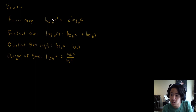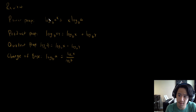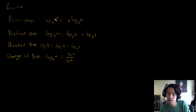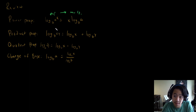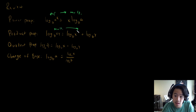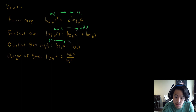The power property: if you have an exponent inside a logarithm, it turns into multiplication. For the product property: if you have multiplication inside the function, you can turn it into addition. For a quotient: if it's division, you can turn it into subtraction. And for a change of base, you just have to remember that formula.